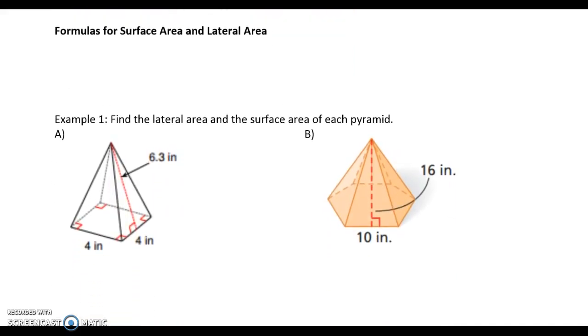All right, so lateral area, capital L. It's going to be 1/2 times the perimeter times L, where P is the perimeter of the base. And that base could be a square, rectangle, triangle, regular hexagon, whatever. And this cursive L, this is slant height. So remember, that's going to go from the tip to the edge of your base.